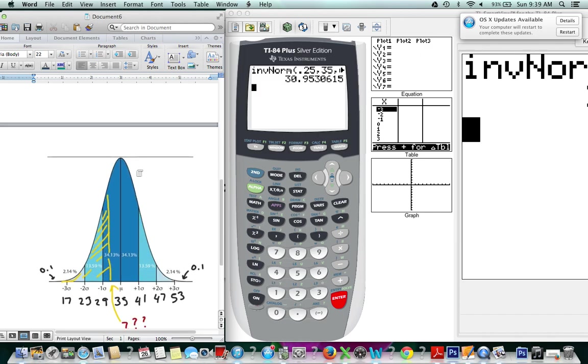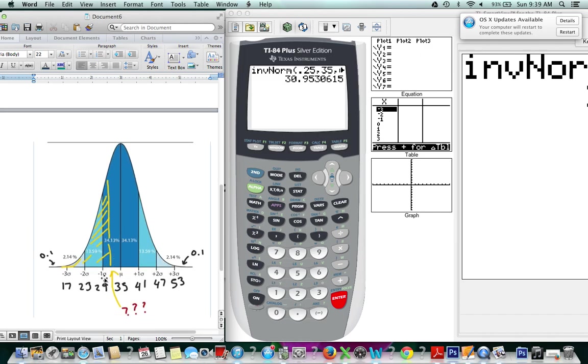We expected our answer to be between 29 and 35, with some unknown number, and 31 totally makes sense, because it is between 29 and 35, closer to 29.